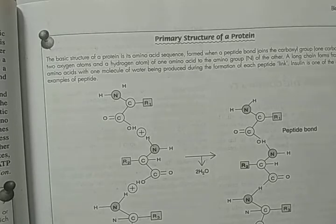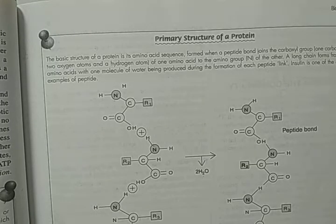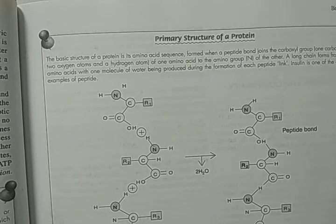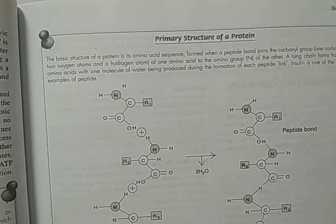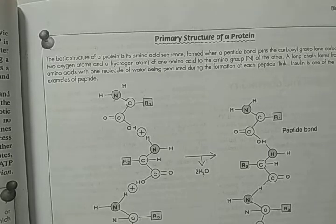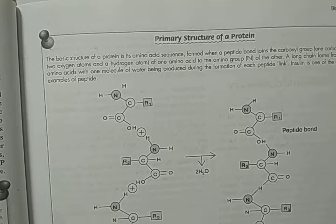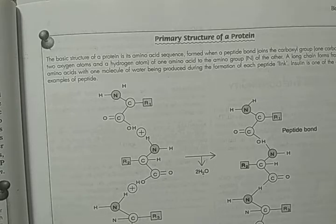The most energy-rich bonds are those attaching the second and third phosphate groups. When the bonds break down, they release energy used by the cell. Animal cells produce energy from food, and plants do so by photosynthesis. Simple sugars are broken down into pyruvic acid in the cell's cytoplasm, and a small amount of ATP is produced.